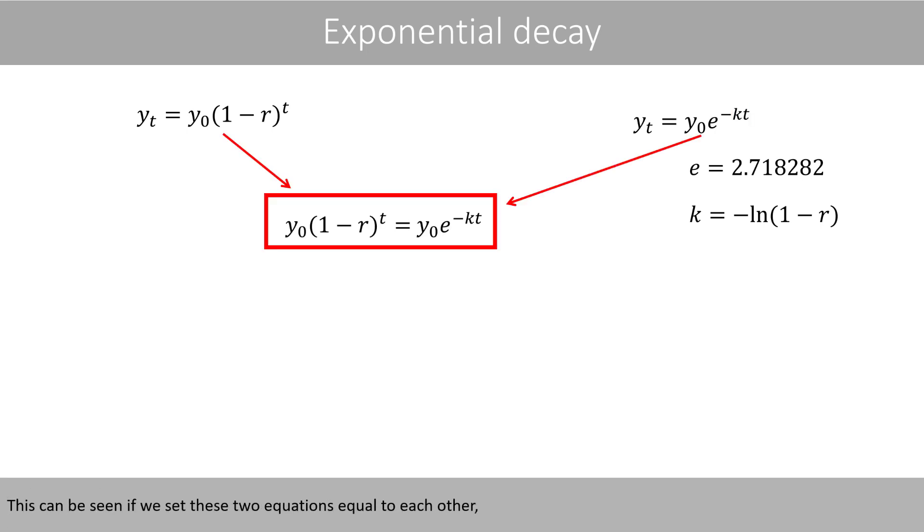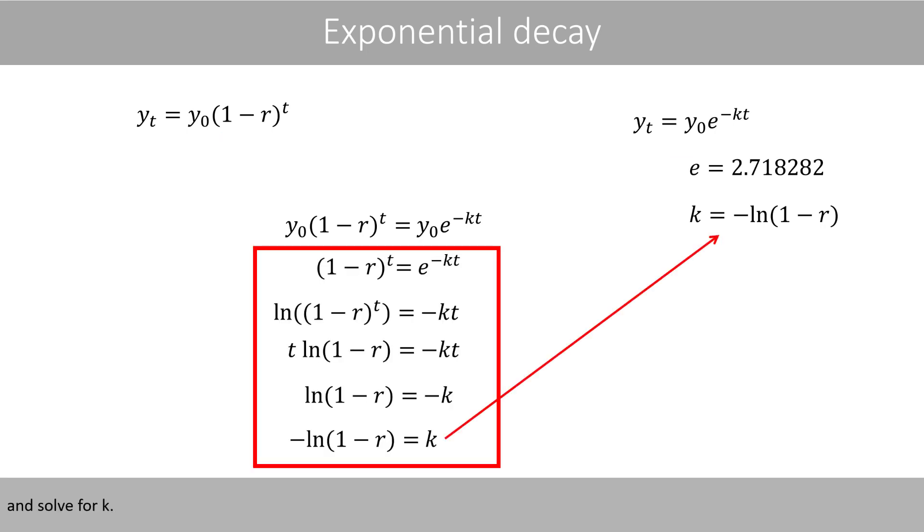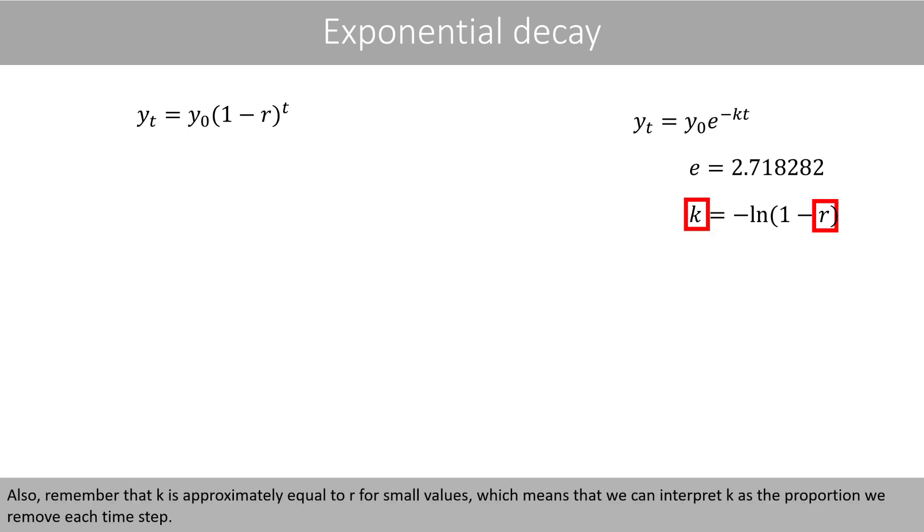This can be seen if we set these two equations equal to each other and solve for k. Also, remember that k is approximately equal to r for small values, which means that we can interpret k as the proportion we remove each time step.